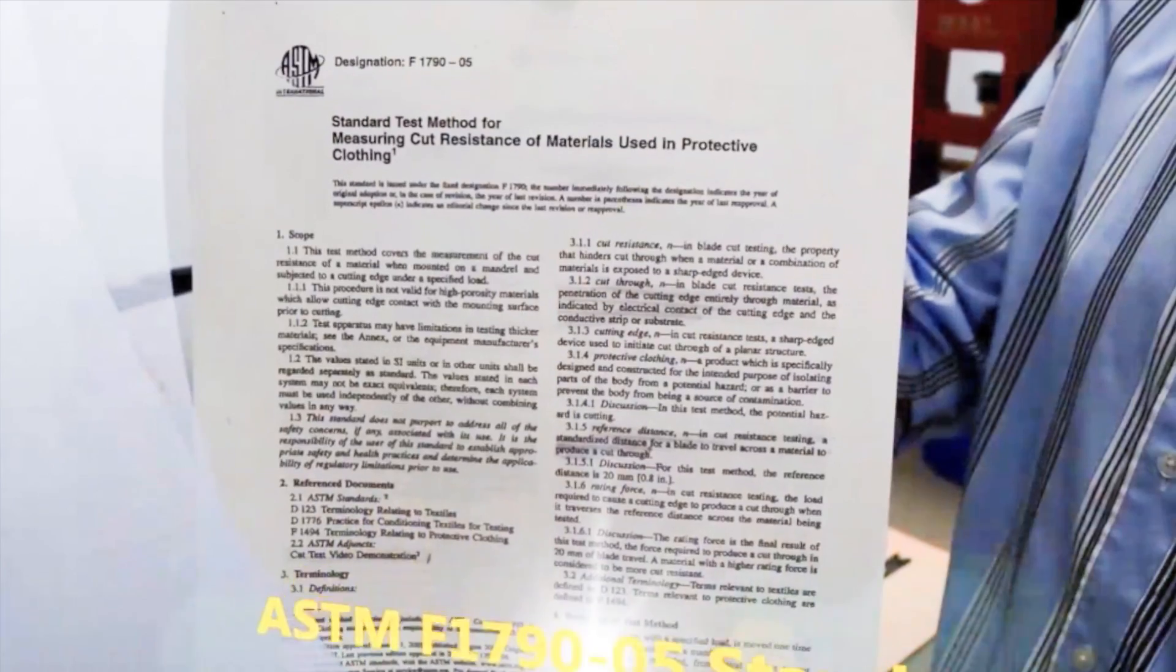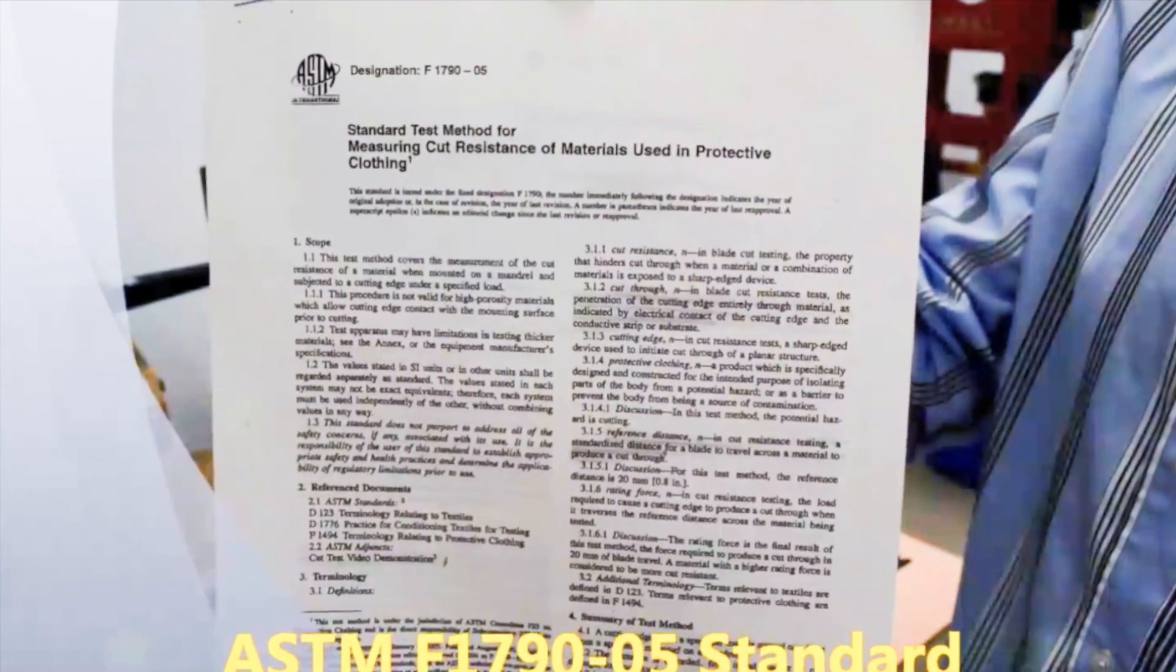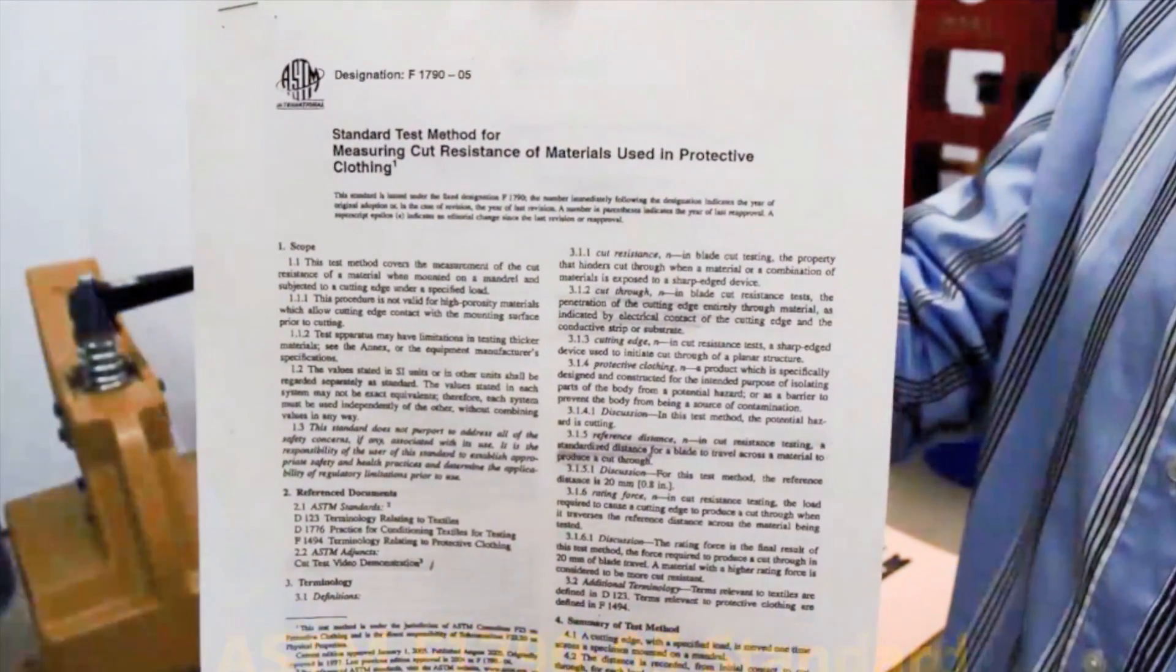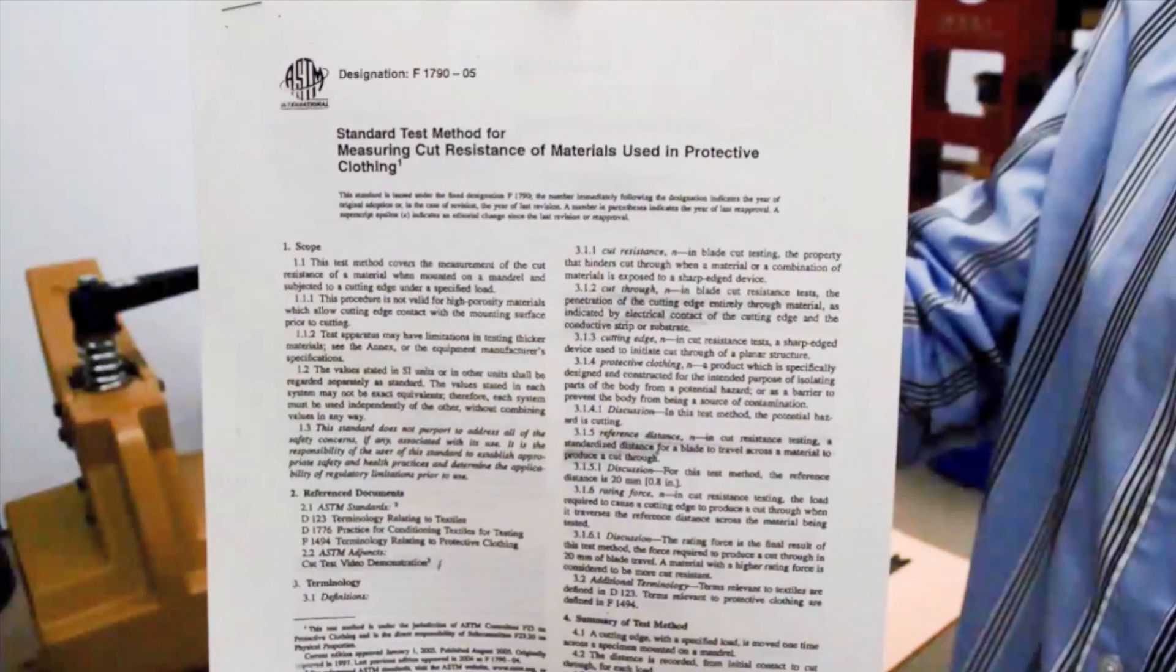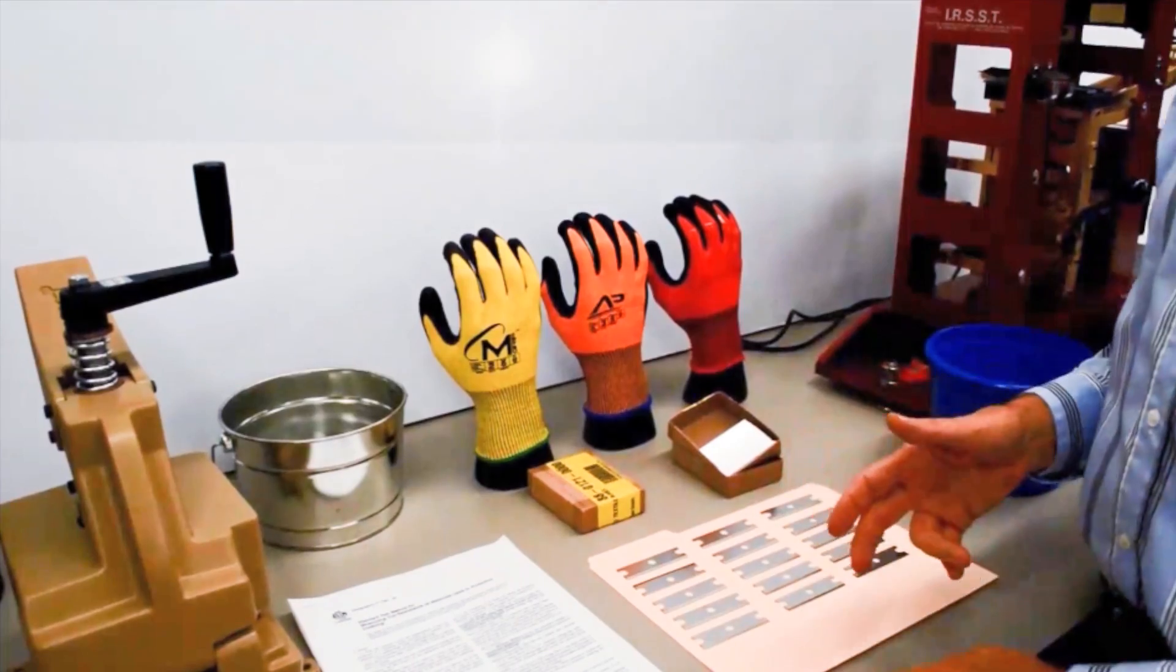In North America, the ASTM F1790 is the accepted test methodology for doing cut resistance testing.